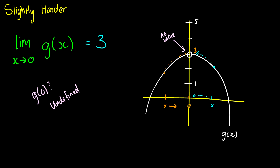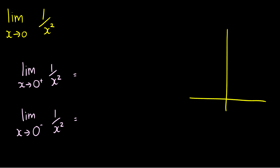Using that knowledge, we can look at other graphs. Here we have 1 over x squared. If we put in x = 1 and x = -1, we end up at positive 1 for both. If we put in x = -2 or x = 2, we end up at 1/4. Plotting these points gives us this graph.